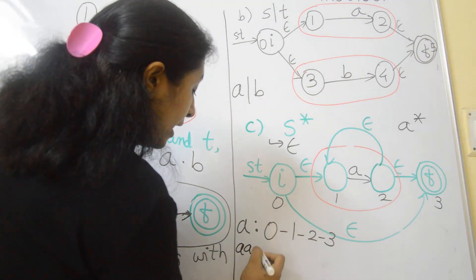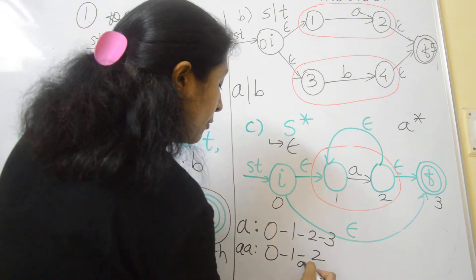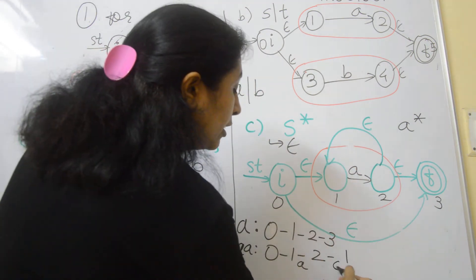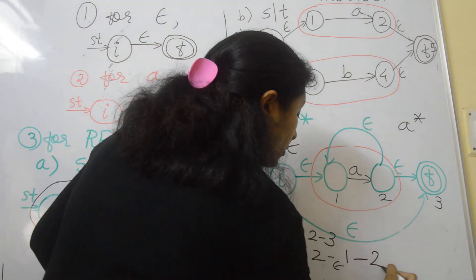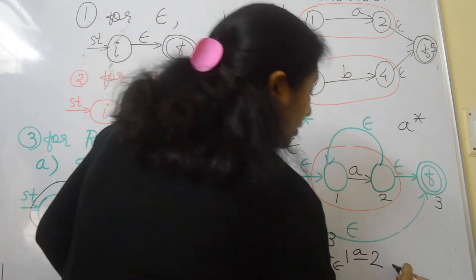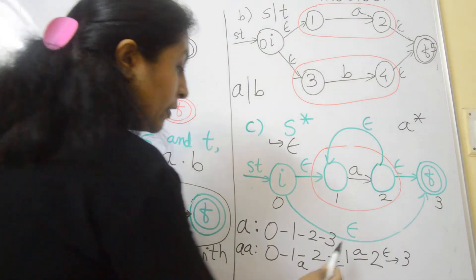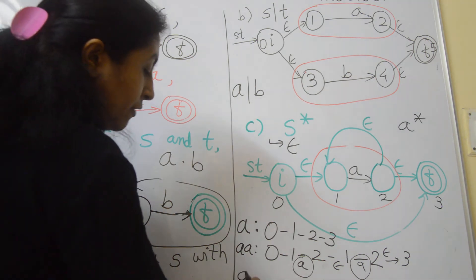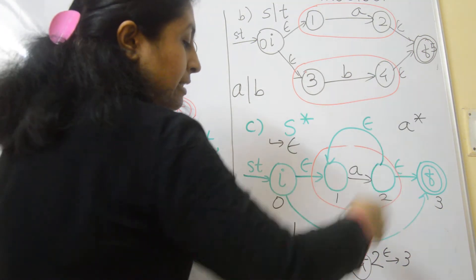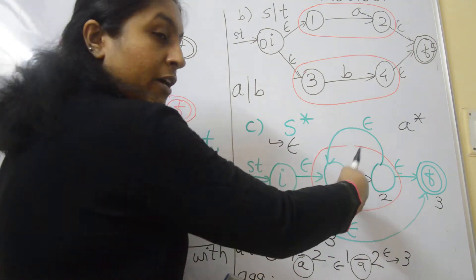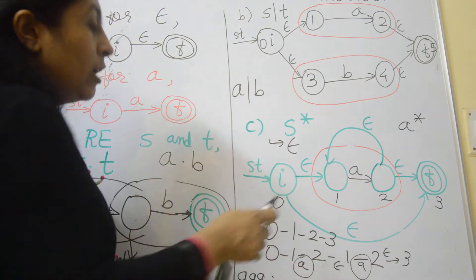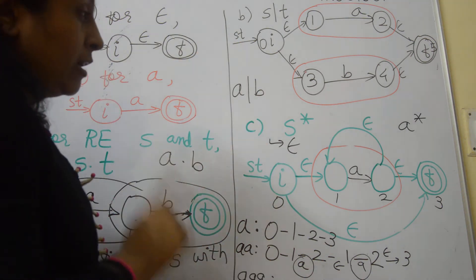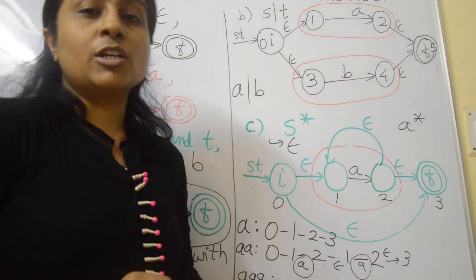For accepting double A: from 0 to 1 to 2 on symbol A, then for repetition go back to state 1 from state 2 on a null transition, then from 1 to 2 on symbol A, and then from 2 to 3 on null. This shows it is accepting 2 occurrences of A. For triple A, repeat this step 3 times. This is all about Kleene closure construction, and all the steps show the equivalent NFA using Thomson's construction method.